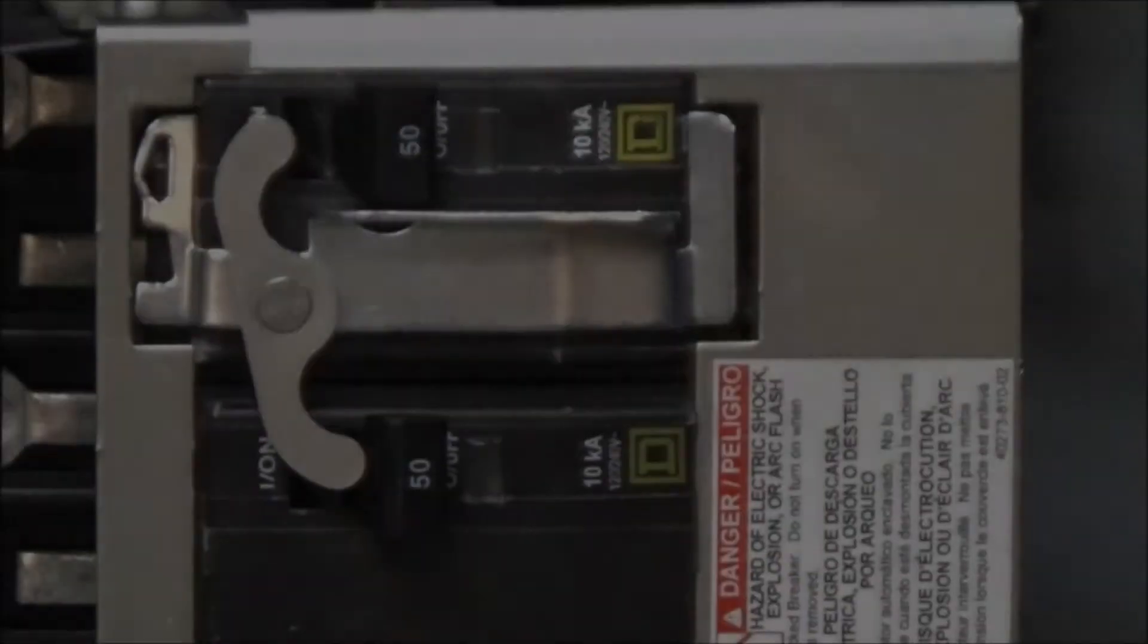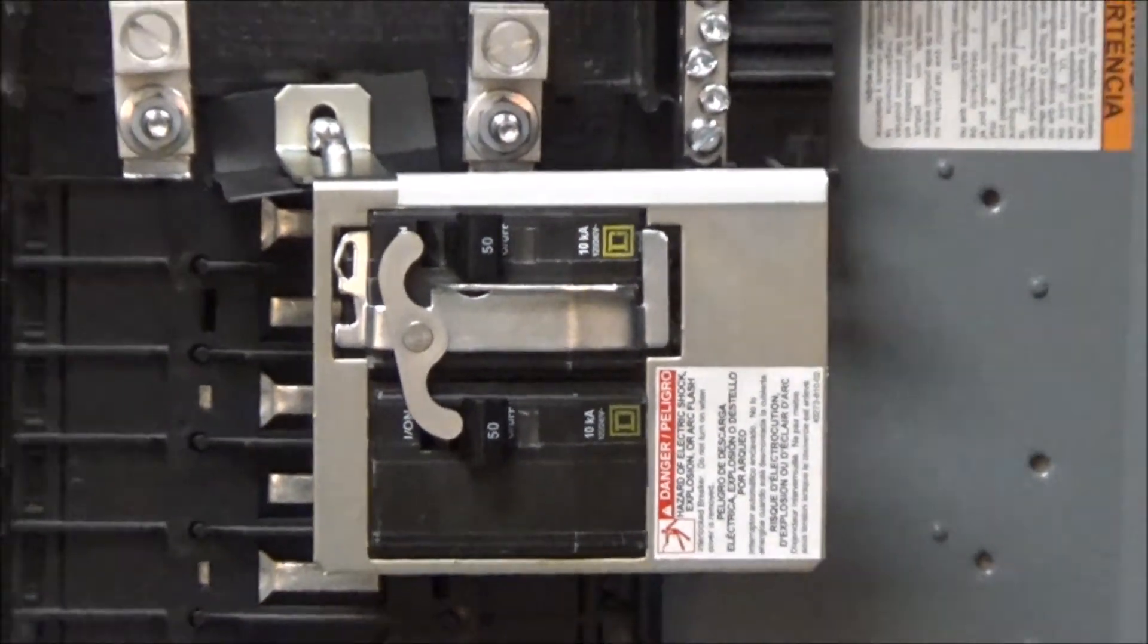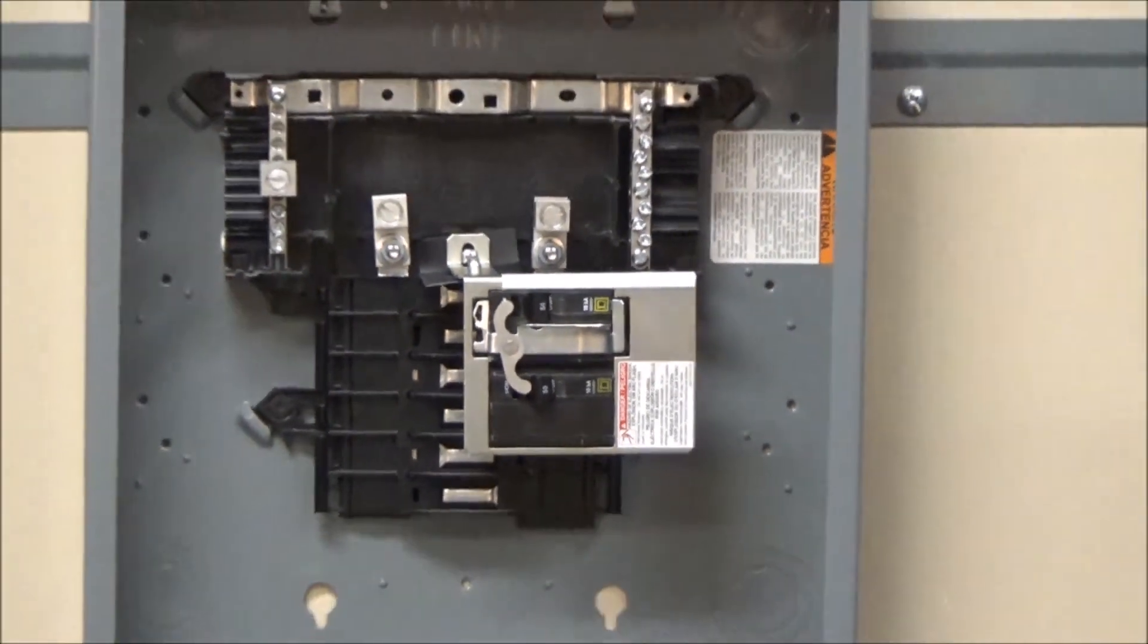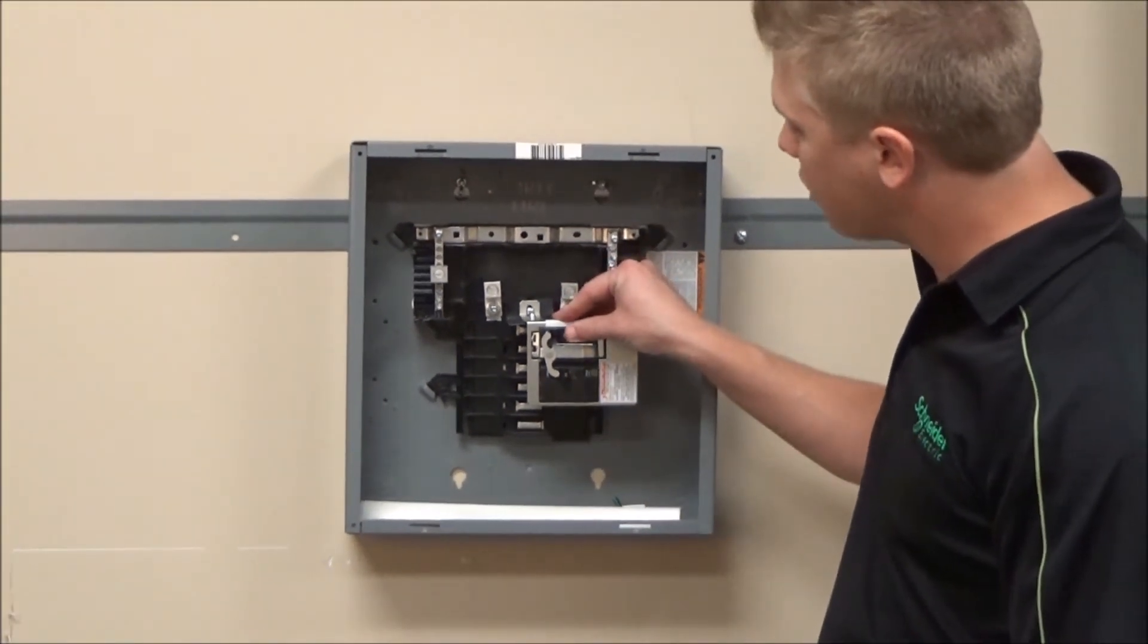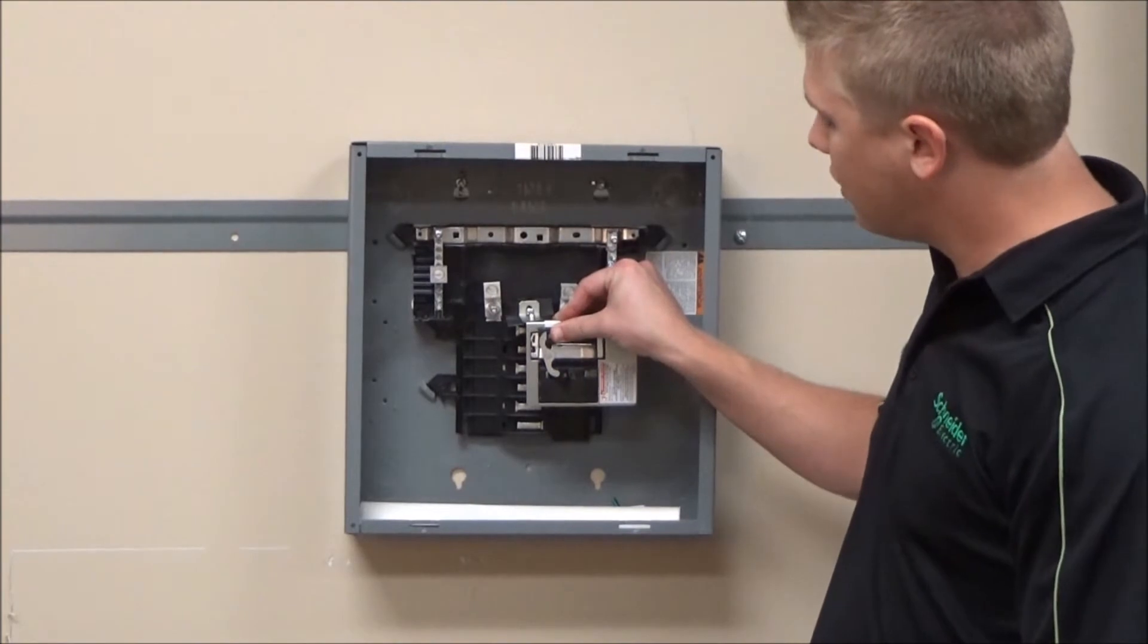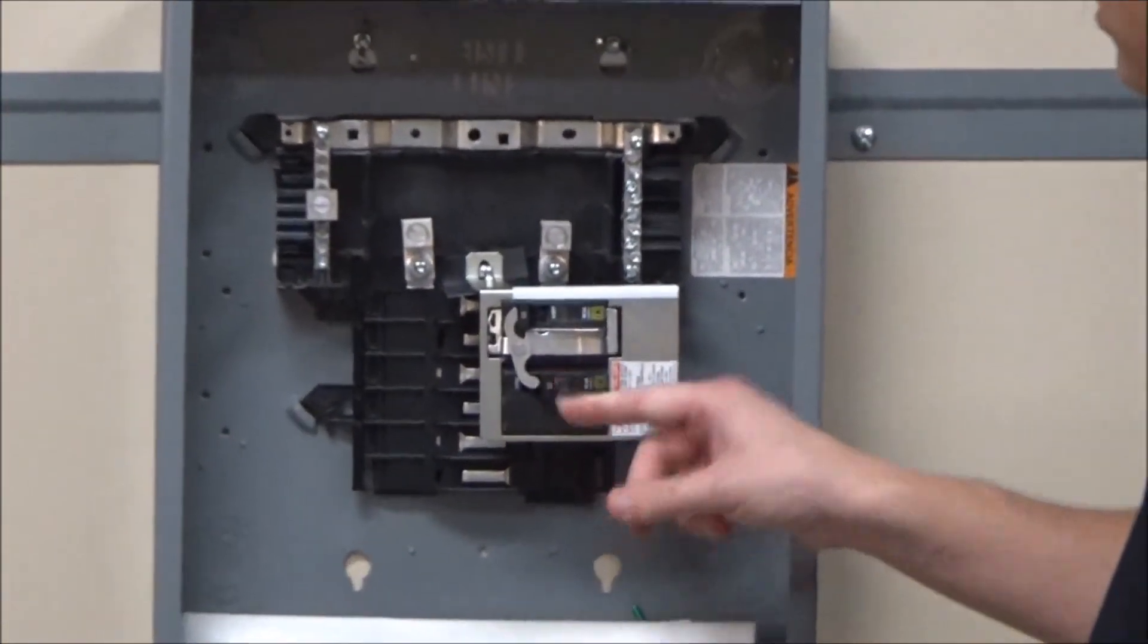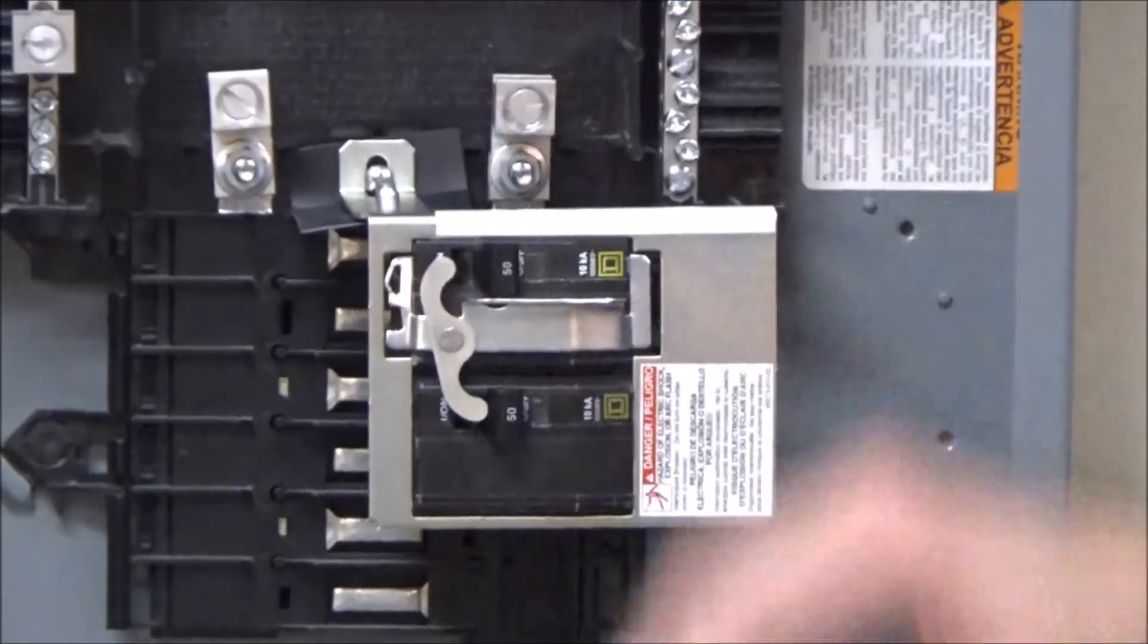You now have the PK4DTIM4LA manual transfer kit installed so that when one of the supply breakers is in the on position, the other supply breaker cannot be turned on until the first breaker is turned off.